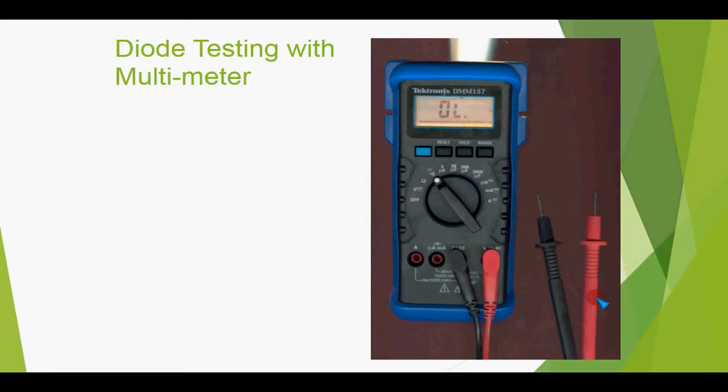Digital multimeters provide the facility to test the serviceability of the diode, and also if the marking of cathode or anode on the diode has been omitted or removed and we are unable to detect which terminal is which, we can use the digital multimeter to identify the anode and cathode of the diode.